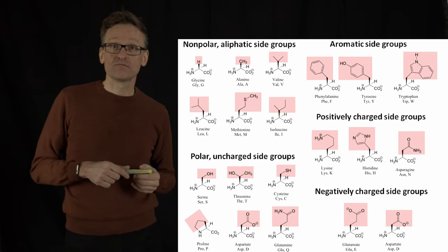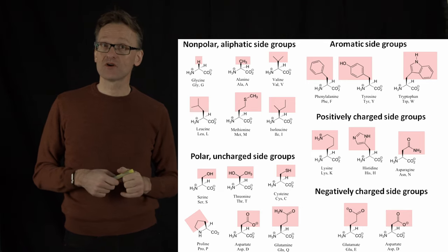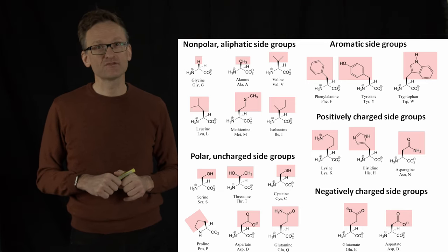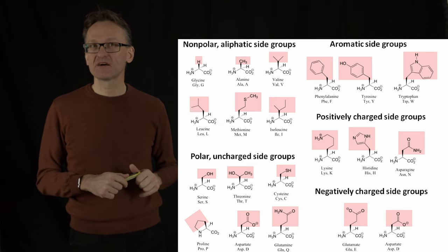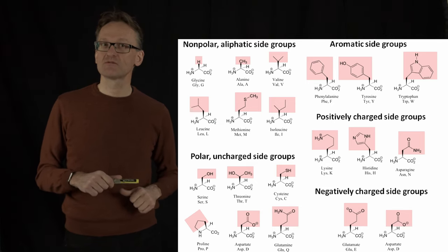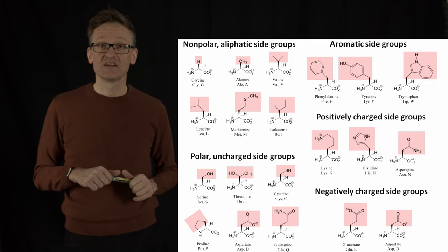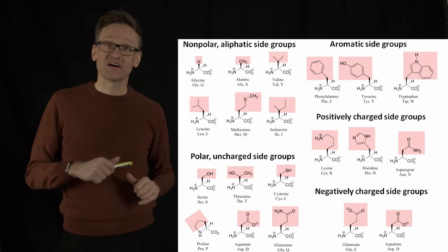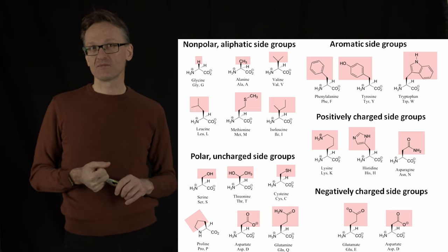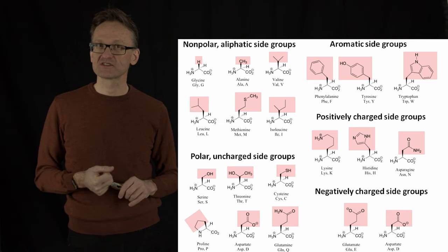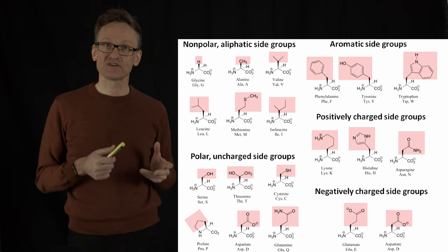We have some polar side chains. They're not charged, but they are polar. They will not love to be in those lipid environments, but they might be able to get by there under some circumstances, but they will likely prefer the head groups. Then we have positively and negatively charged side chains. There is no way they're going to enter the membrane, at least not under normal circumstances. They will need to be in the head groups or facing water.